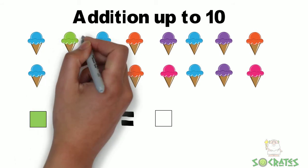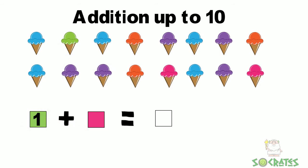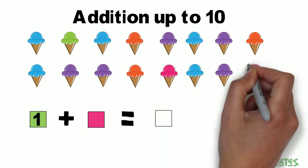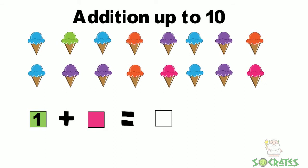The green ice cream cones, I see one. And pink, we see one, two. Two is for pink and so two plus one equals three. Another way we can write it is if we